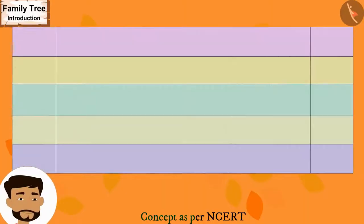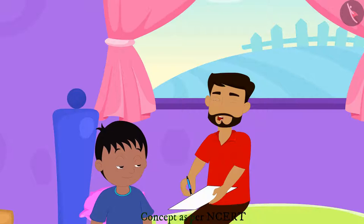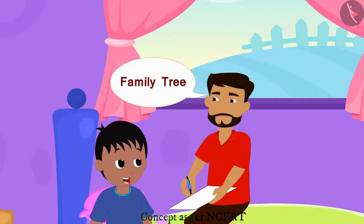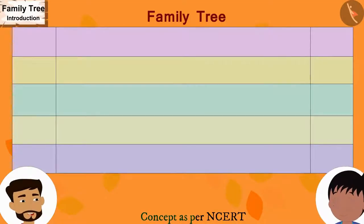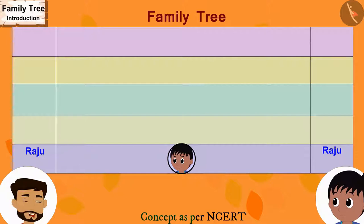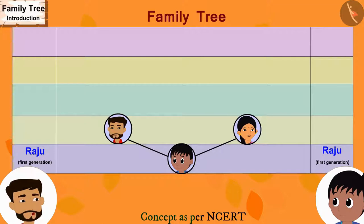Raju's father started making his family tree on a paper. What are you making, father? I am making our family tree. What's that, father? The family tree is a picture in which we depict all the relatives of our family. Look, Raju. First, I will write your name here — this is our first generation. Now, I will draw two lines above your name and write your mother's name and my name. We are both in the second generation of this family.